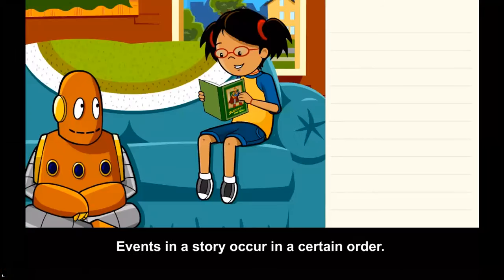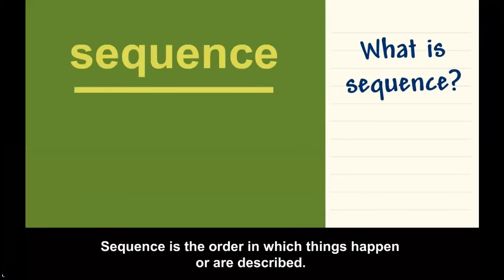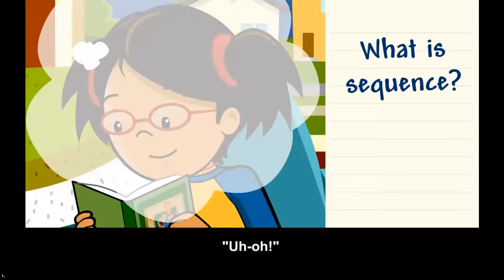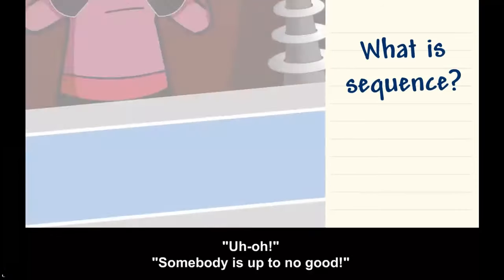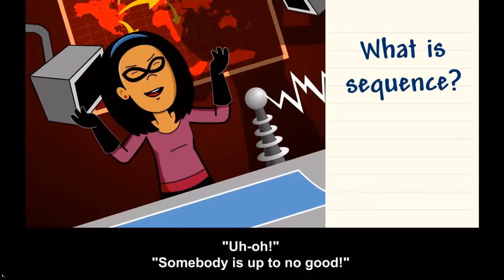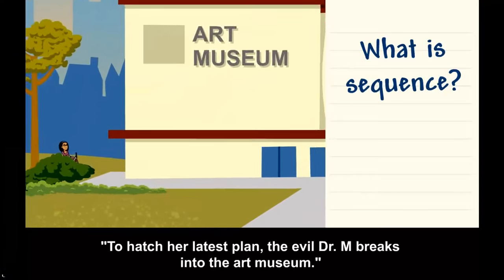Events in a story occur in a certain order. What is sequence? Sequence is the order in which things happen or are described. Uh-oh, somebody is up to no good. To hatch her latest plan, the evil Dr. M...